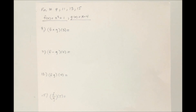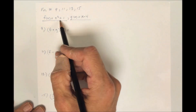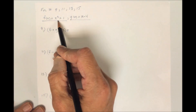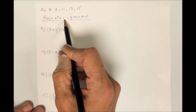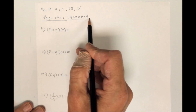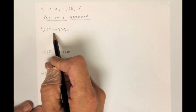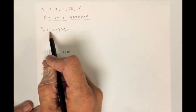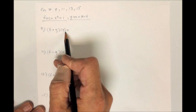This is from your section 4 problems, problems 9 through 15. In all of these cases, they use these two functions: f of x is equal to x squared plus 1, and g of x is equal to x minus 4. In the first problem, they're saying: what's f plus g of 3?